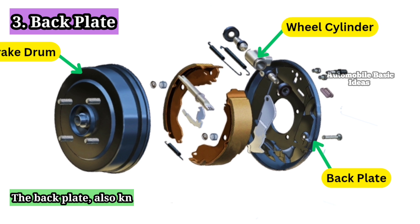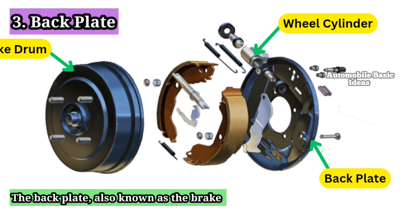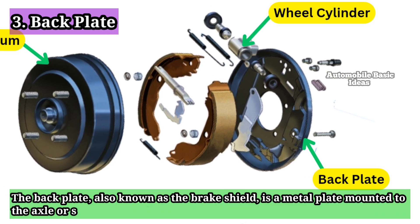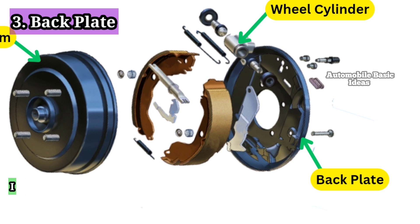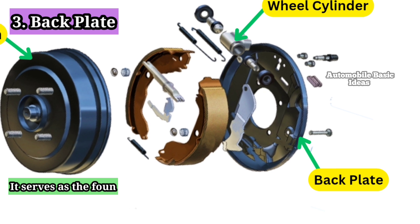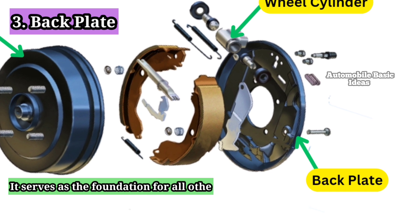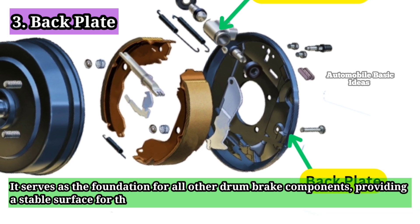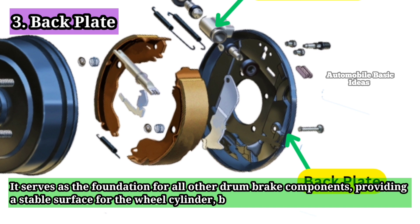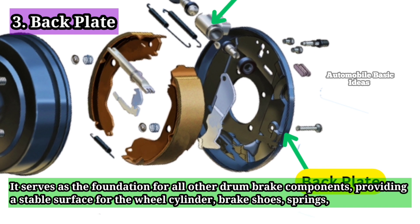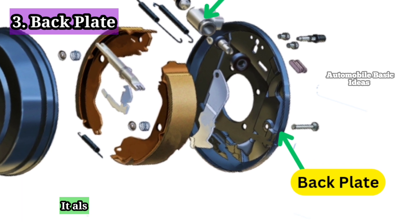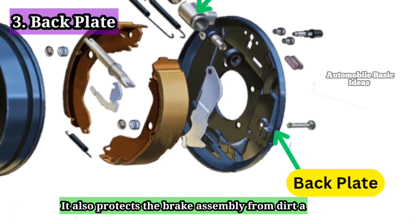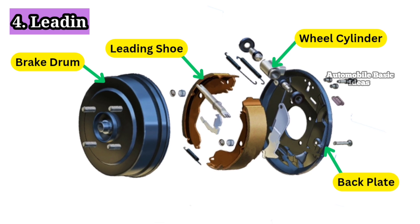3. Back plate. The back plate, also known as the brake shield, is a metal plate mounted to the axle or spindle. It serves as the foundation for all other drum brake components, providing a stable surface for the wheel cylinder, brake shoes, springs, and other parts. It also protects the brake assembly from dirt and debris.